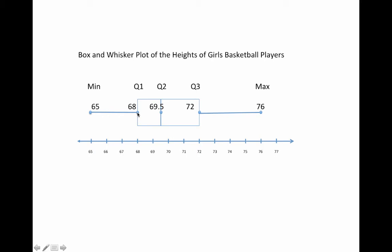Notice that where Q1 and Q3 are, the box goes directly through those points. And that's really all there is to the box and whisker plot.